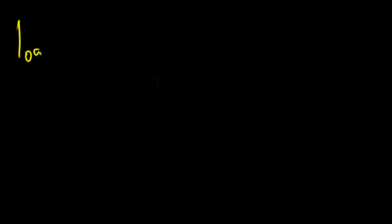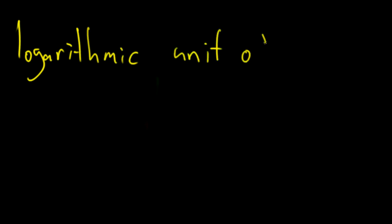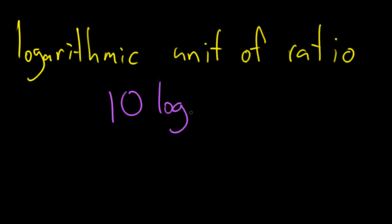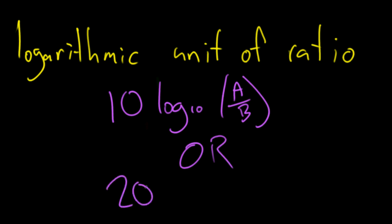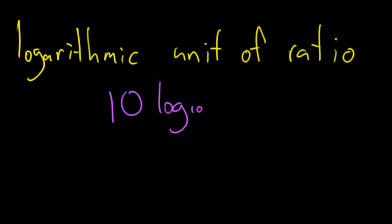When people first learn about decibels, they're usually told something like: a decibel is a logarithmic unit of ratio. They're typically given a mathematical definition, something like 10 times the logarithm base 10 of a ratio A over B, or 20 times the logarithm base 10 of A over B. Well, no wonder people are confused. Let's forget all that.